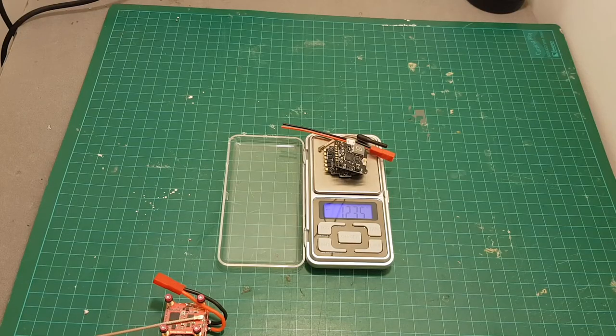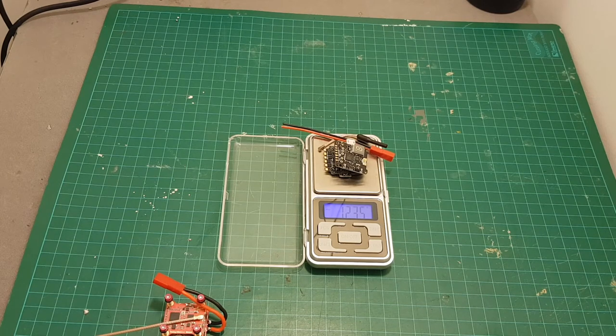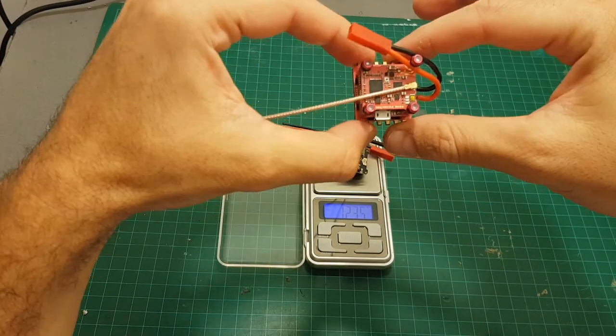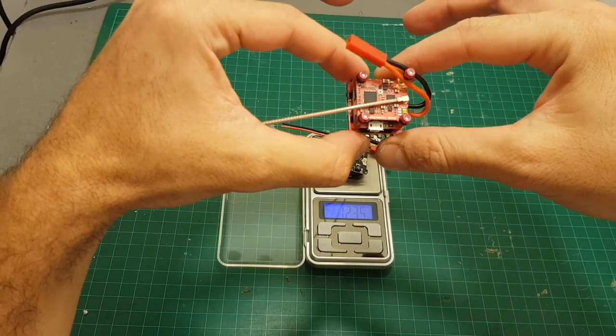The weight of the HGLRC tower is 12.35 grams without the spacers but I still think it's going to be lighter than the XUAV Mini F4 tower.